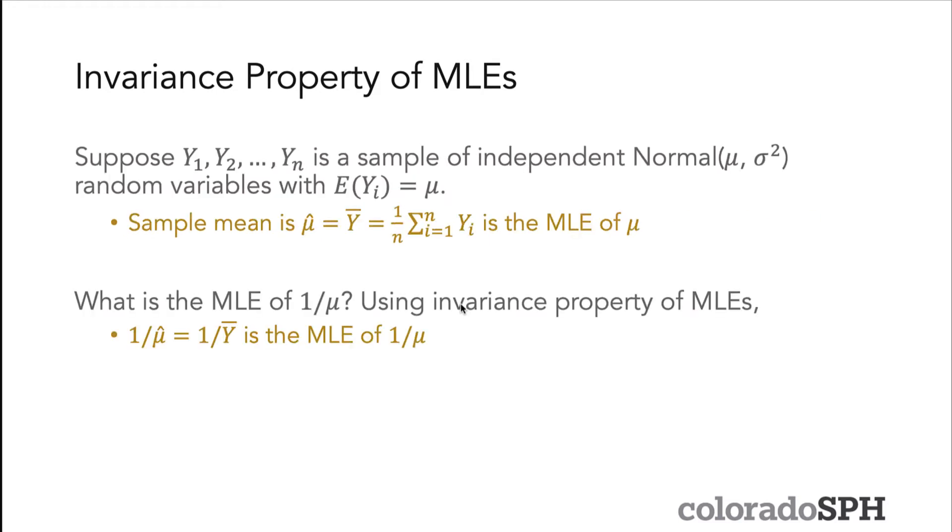An example of how to use this property is given on this slide. Suppose you have Y₁ to Yₙ, which is a sample of independent variables that are normally distributed with mean μ and variance σ². The sample mean μ̂ equals Ȳ, and that's the MLE of μ for the normal distribution.